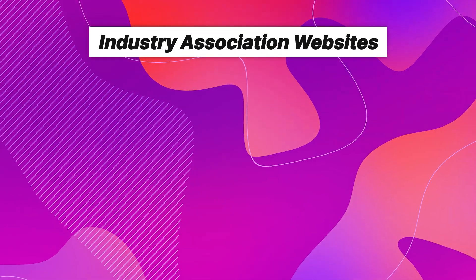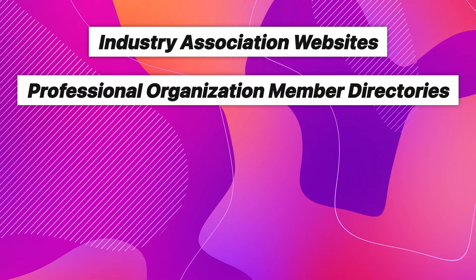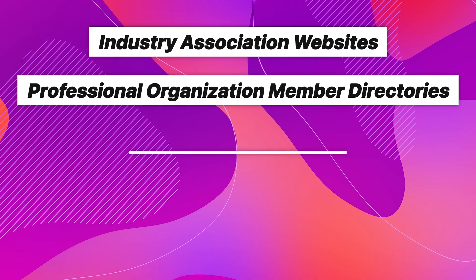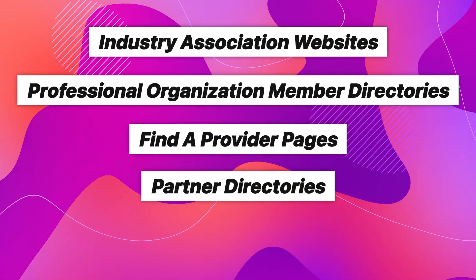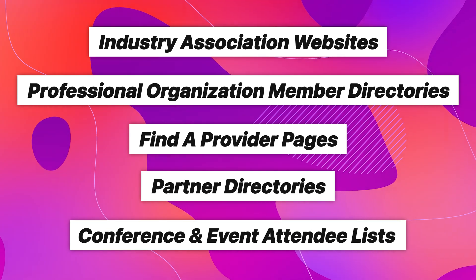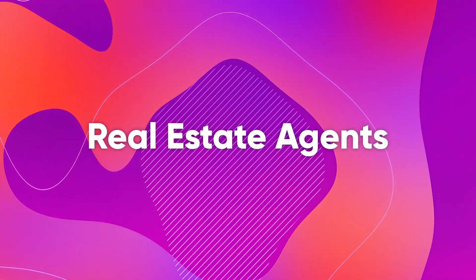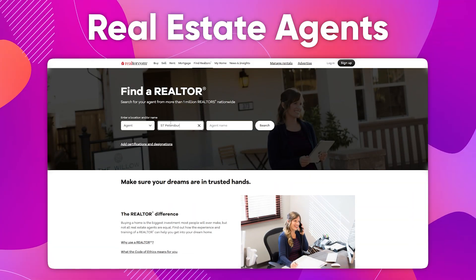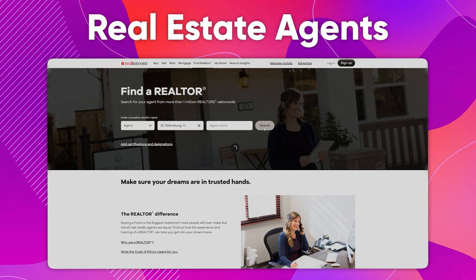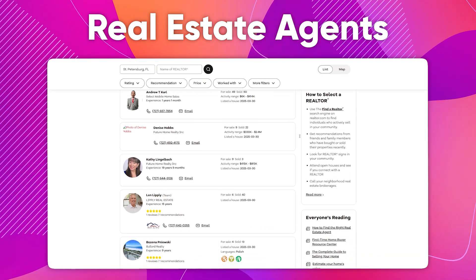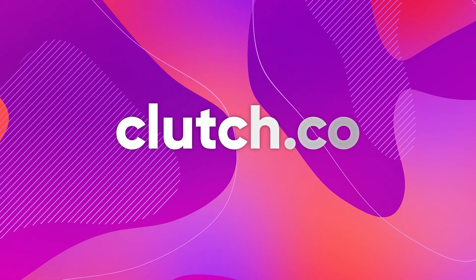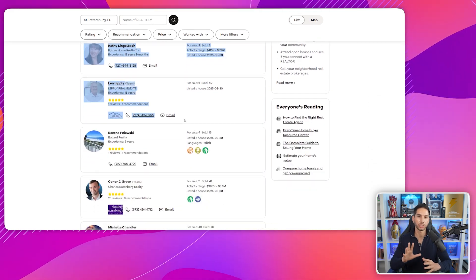Some of the best places to look include industry association websites like the Chamber of Commerce, professional organization member directories, find-a-provider pages, partner directories on major platforms, and conference and event attendee lists. For example, if you're targeting real estate agents, you could go to realtor.com, search for a location, and immediately get a directory of agents in that area. For B2B services, clutch.co is a goldmine that lists thousands of service providers with detailed information. Once you've found a good directory, simply copy all the information on the page — don't worry about formatting, just grab it all.